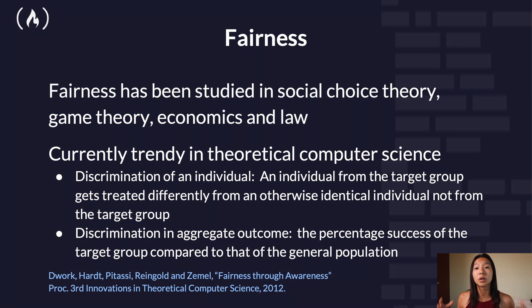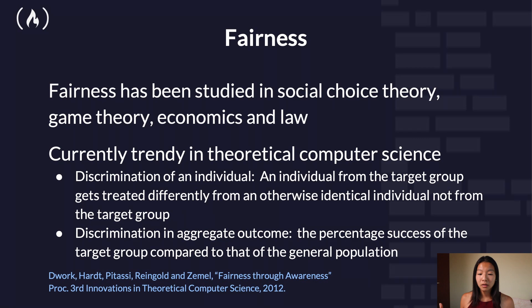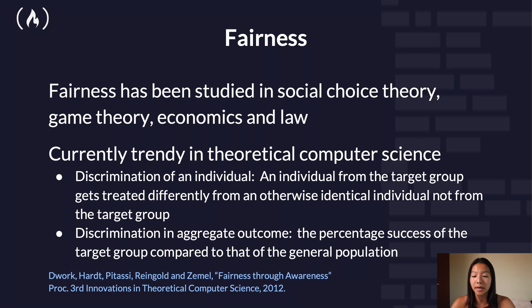Individual fairness is also not enough to ensure group fairness. For example, suppose you are looking at college admissions and thinking about using test scores as your admission criteria. If you have two groups with very different performance on standardized tests, then you won't get group fairness if you have one threshold for the standardized test score. For a lengthier discussion, you should read the book The Ethical Algorithm: The Science of Socially Aware Algorithm Design by Michael Kearns and Aaron Roth.